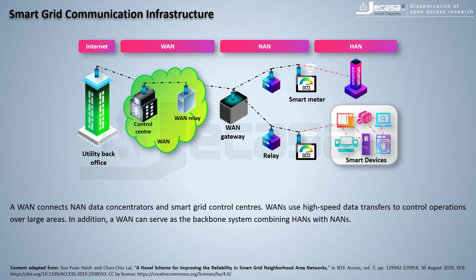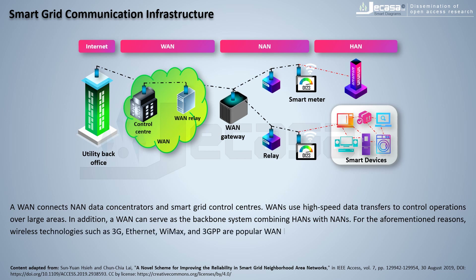In addition, a WAN can serve as the backbone system combining HANs with NANs. For these reasons, wireless technologies such as 3G, Ethernet, WiMAX, and 3GPP are popular WAN building blocks.